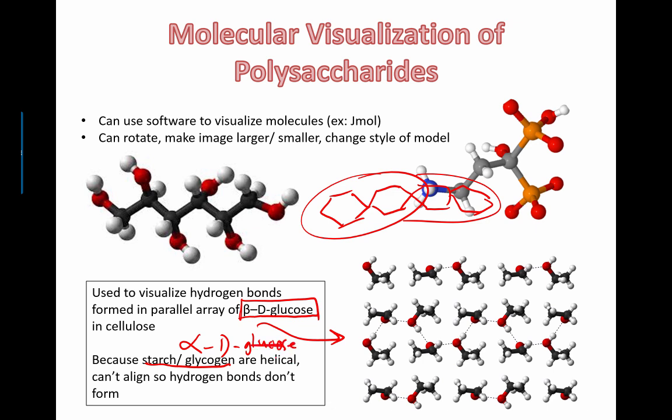If you're not sure what that is, check out some of the previous videos where we talk about the difference between alpha and beta glucose. Because starch and glycogen are made up of alpha-D glucose molecules, they can't align in the same way that beta-D glucose does in cellulose, so you don't get those extra hydrogen bonds that are showing up.